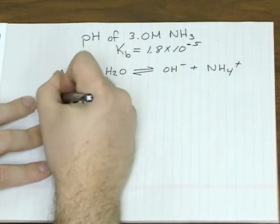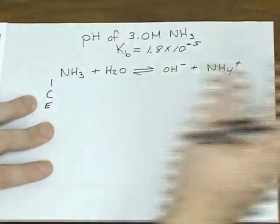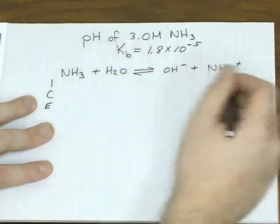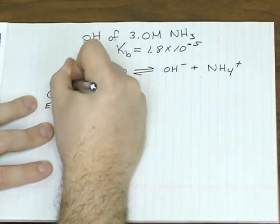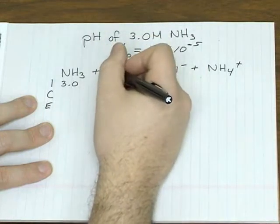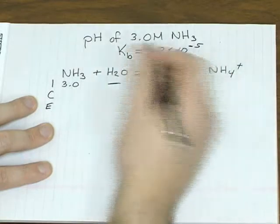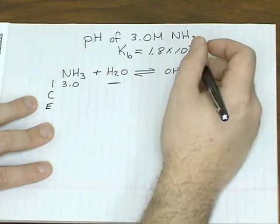So once again, we start with an ICE table. We take that as the formal concentration before any dissociation occurs. So we have initially 3 molar of ammonia. Again, water is a liquid, so we don't care about its concentration.